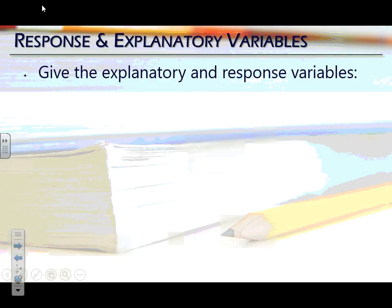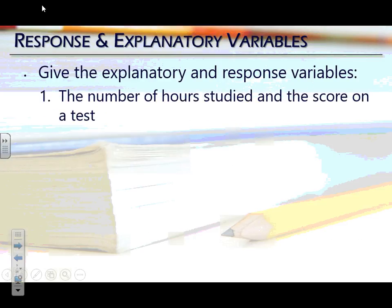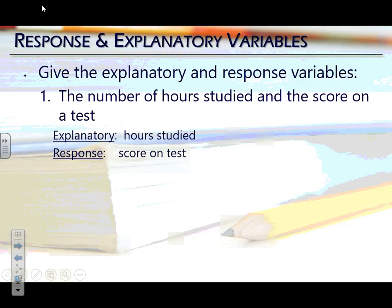For example, if I gave you the two variables — number of hours studied and score on a test — the number of hours you study the night before and then the score on the test: which would we expect to be the explanatory? The amount of hours you study. Which one should be affected? The score on the test. So my explanatory variable is number of hours studied, and the response variable is score on the test.